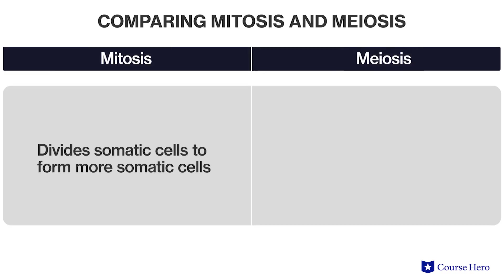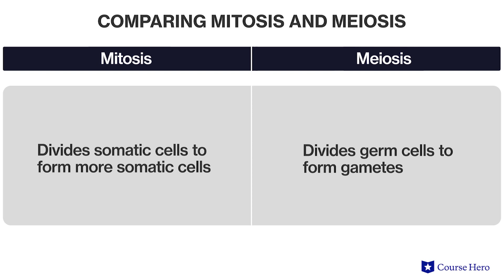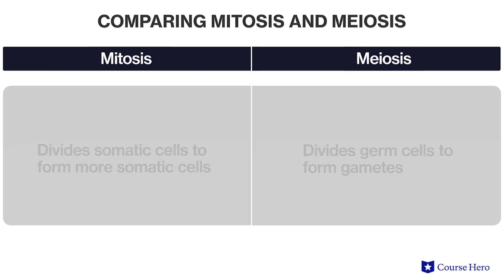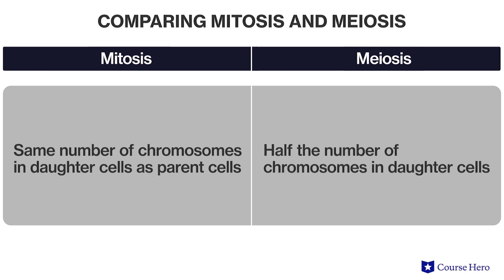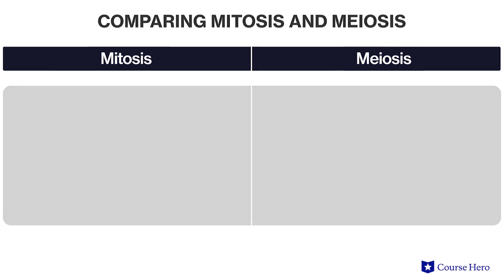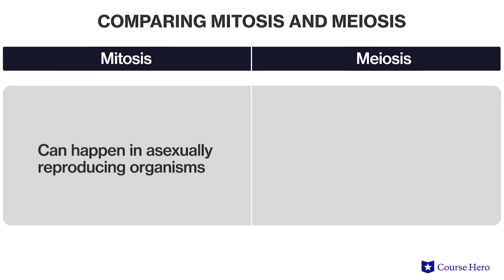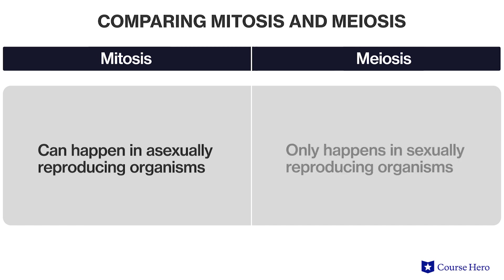For example, somatic cells divide by mitosis to form more somatic cells, while only germ cells can divide by meiosis to form gametes. The new cells, which we call daughter cells, resulting from mitosis, have the same number of chromosomes as the parent cell. Meiosis, on the other hand, generates daughter cells with half the number of chromosomes. Mitosis can happen in asexually reproducing organisms, whereas meiosis only happens in sexually reproducing ones.